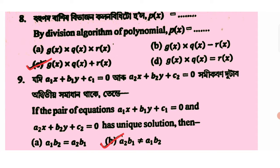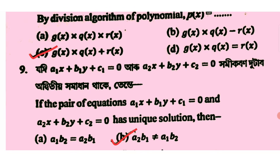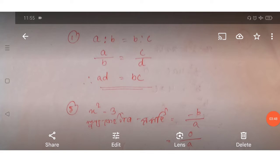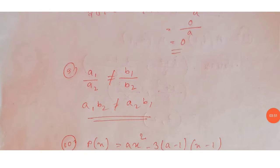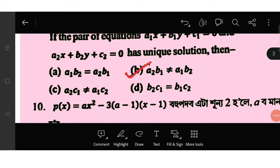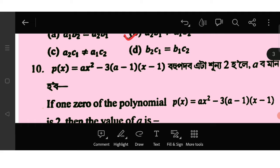The next option is A1x plus B1y plus C1 equals 0, and B2x plus B2y plus C2 equals 0. When we see the condition, we can see what is happening here. If A1 by A2 does not equal B1 by B2, so A1 B2 does not equal A2 B1. If you can see the option here, then the option is B2: a2 b1 does not equal a1 b2.